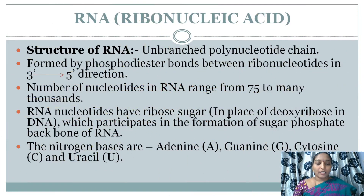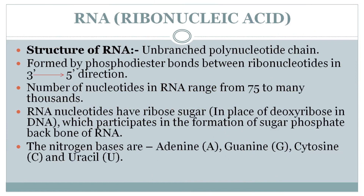What are the types of RNA? Initially, we are learning about the structure of RNA. RNA is an unbranched polynucleotide chain, formed by phosphodiester bonds between ribonucleotides in the 3' to 5' direction.